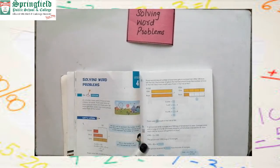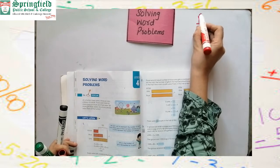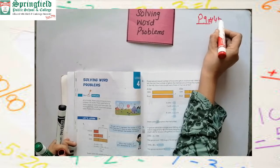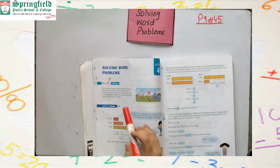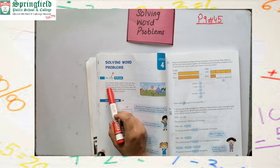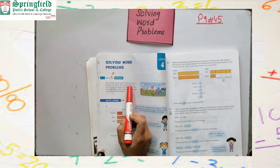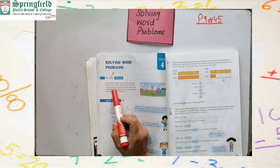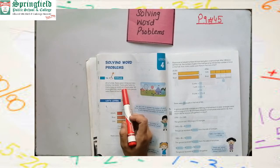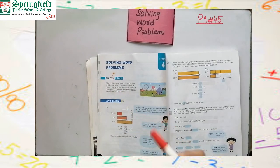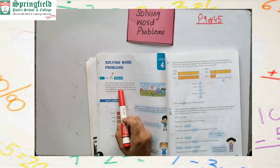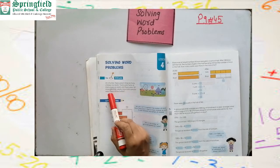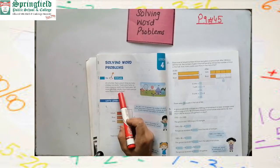Page 45. First we will do examples and then we will solve the questions. The first example says: at a fun fair there were five times as many children as adults. It means if adults is two, then children will be added five times. There were twice as many boys as adults — twice means double, two times — and there were 182 more girls than adults. So we don't know the adult strength.